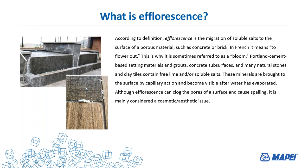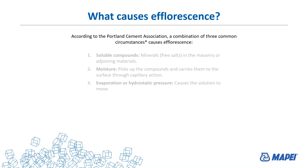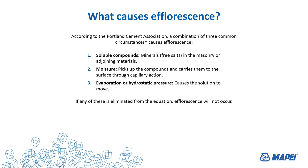According to the Portland Cement Association, it takes three different types of circumstances to cause efflorescence. First, there has to be soluble compounds — minerals or free salts in the masonry or adjoining materials, the stone itself. Second, there has to be moisture available to wick through capillary action to the top, bringing it up through evaporation. Moisture is the driving issue — that's what brings it to the top. Third, evaporation causes it to move, bringing the moisture and minerals up at the same time. If any one of these three conditions is eliminated, efflorescence will not occur. You have to have all three.